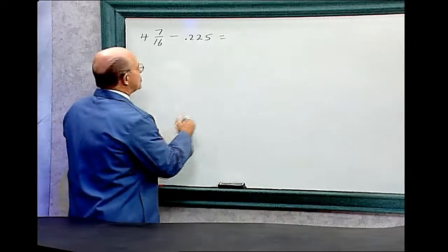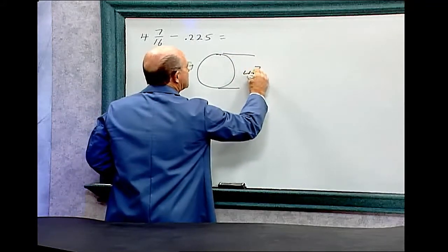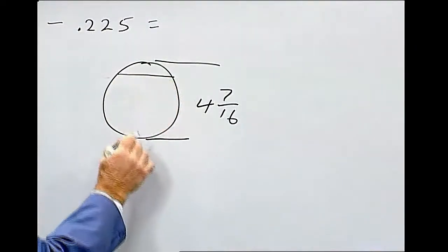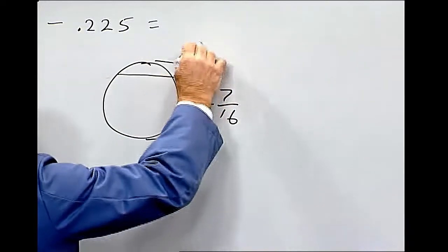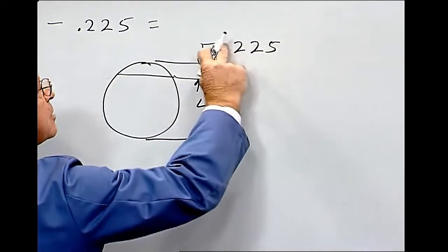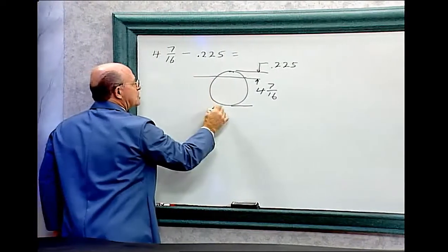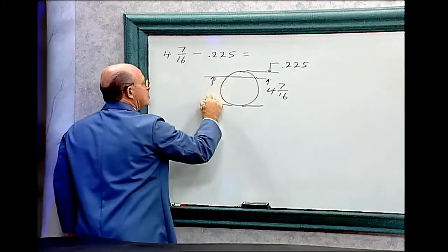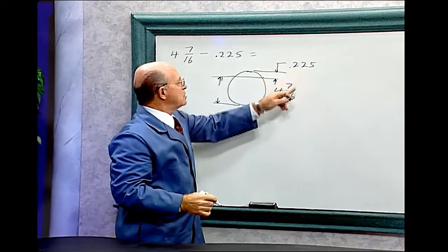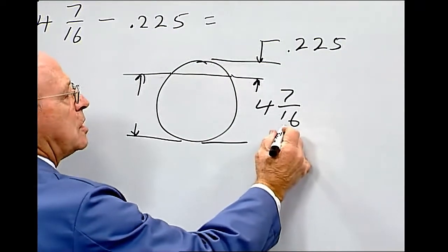Let's figure it out. So the outside diameter is 4 7/16. And we need to mill, and this dimension here is 0.225. So we want to find out what is this dimension.